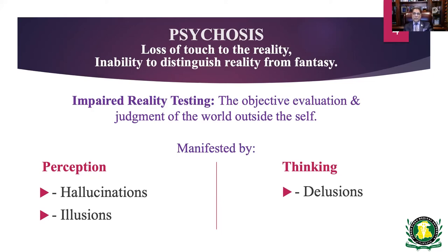Let's start with the basic definitions used in psychiatry. Psychosis, simply put, is loss of touch with reality — when a patient is unable to distinguish reality from fantasy. It can manifest in the form of perception or thinking. Perception can be in two ways: hallucinations or illusions. Thinking disturbances manifest as delusions.